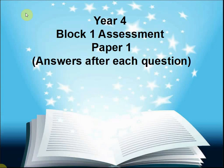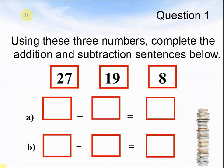This is Peter from First Maths, and today we're looking at Year 4 Block 1 Assessment Paper 1, with answers after each question. Question 1: using these three numbers — 27, 19 and 8 — complete the addition and subtraction sentences below. While you only need to do one sum for A and one sum for B, there are two answers for A and two answers for B. Pause the video until you are ready for the answer.